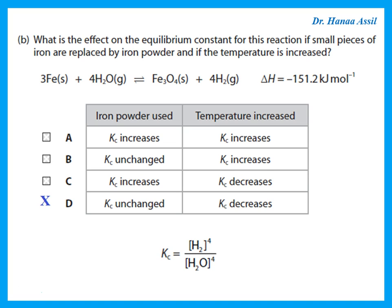What happens to Kc when temperature is increased? The forward reaction is exothermic (ΔH is negative). Increasing temperature causes the equilibrium to shift to the endothermic side, which is the reverse reaction. The equilibrium shifts left, the concentration of hydrogen decreases, and therefore Kc decreases.